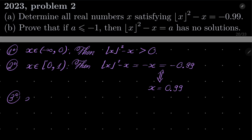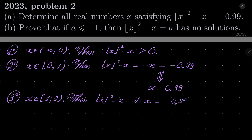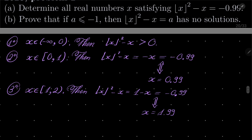Third case: x is between 1 and 2. Then floor of x squared minus x — this time floor of x is 1, so we have 1 minus x — and 1 minus x equals minus 0.99 if and only if x equals 1.99, which is in our interval. So we have already two solutions.